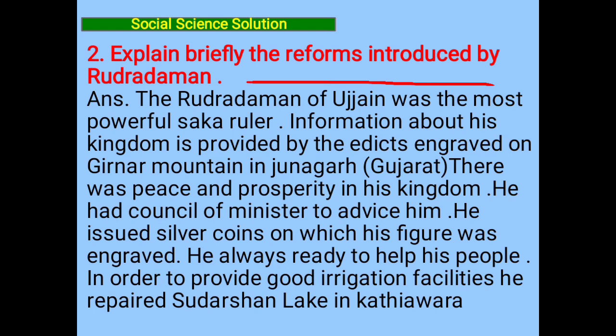Rudra Daman was a very powerful ruler of Ujjain. Information about him is found from the edicts at Girnar Mountain in Junagadh. There was peace and prosperity in his kingdom. He had a council of ministers to advise him. He issued silver coins on which his figure was engraved.